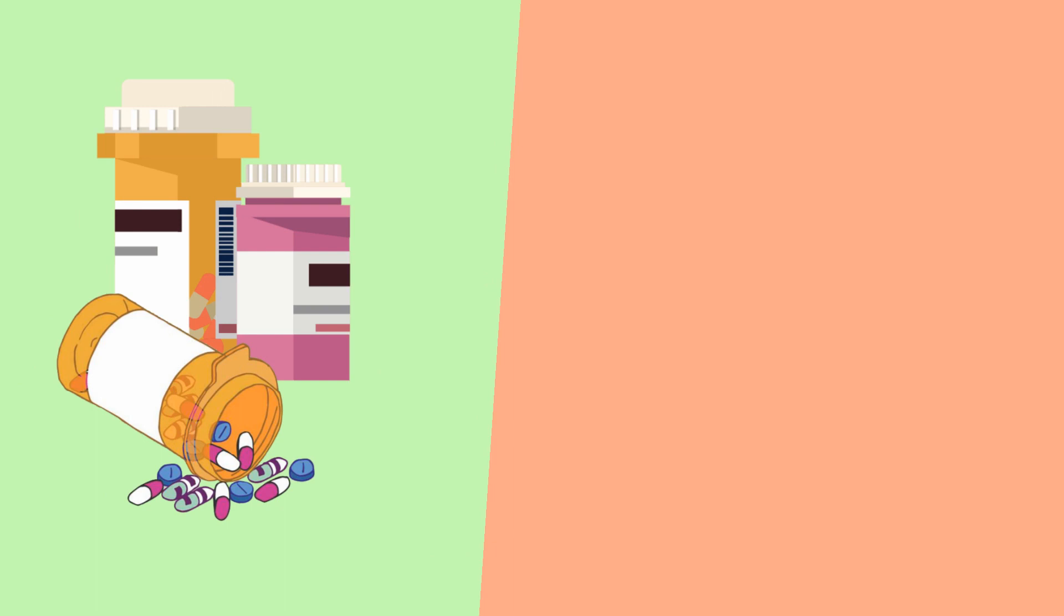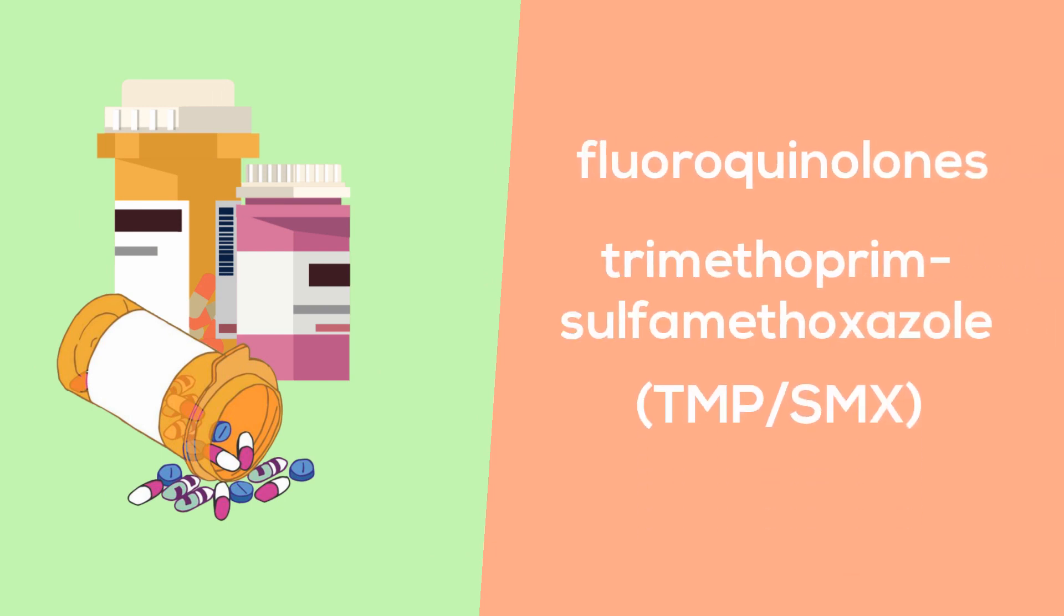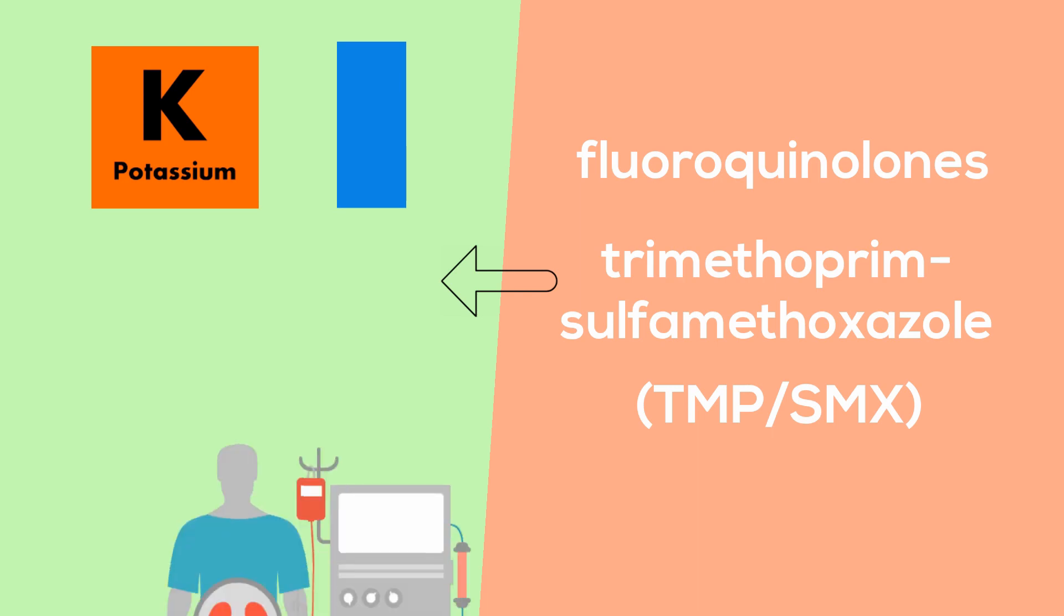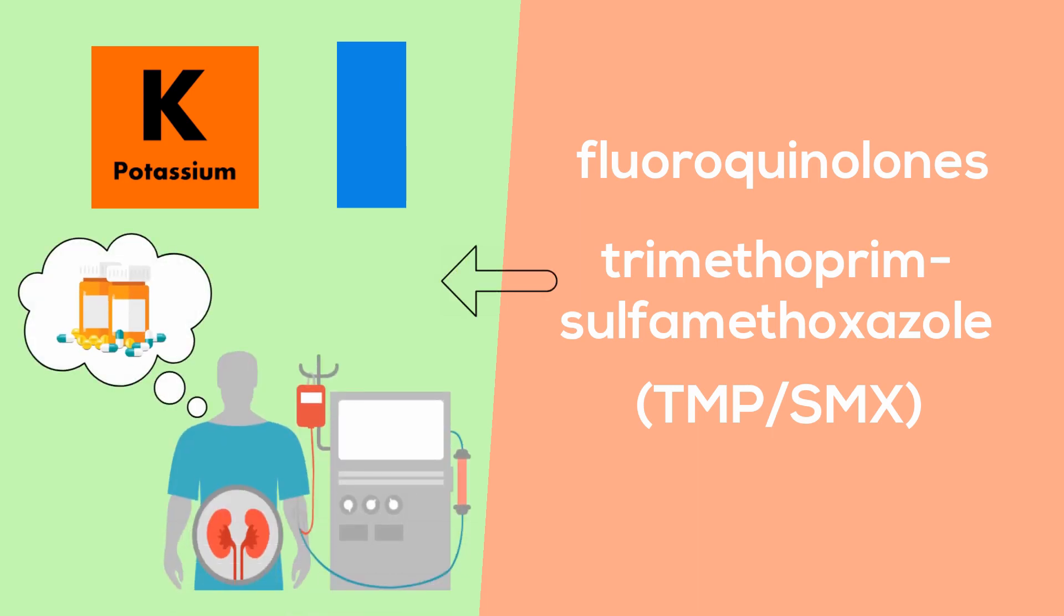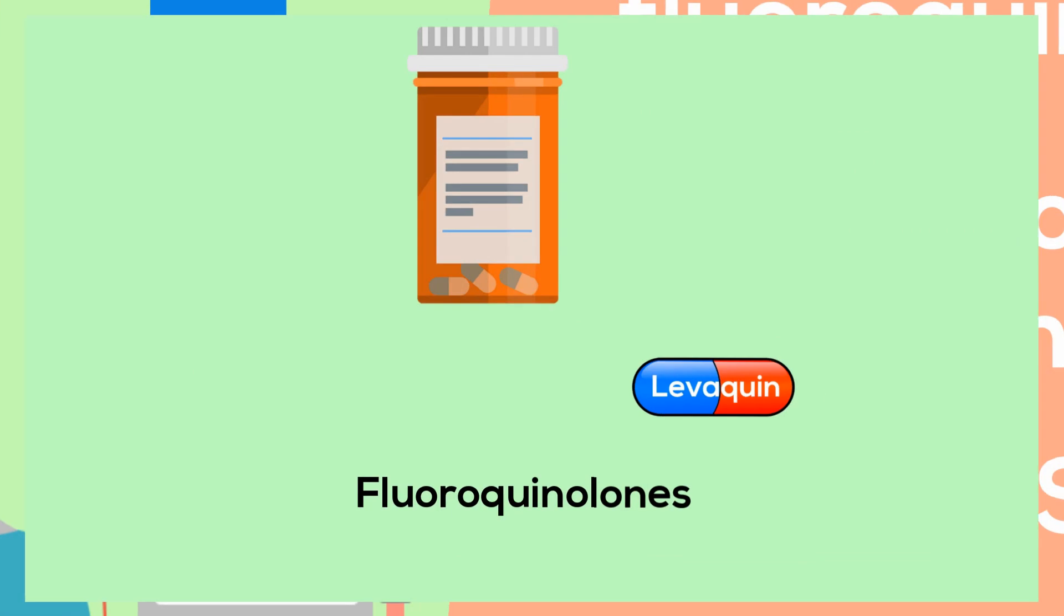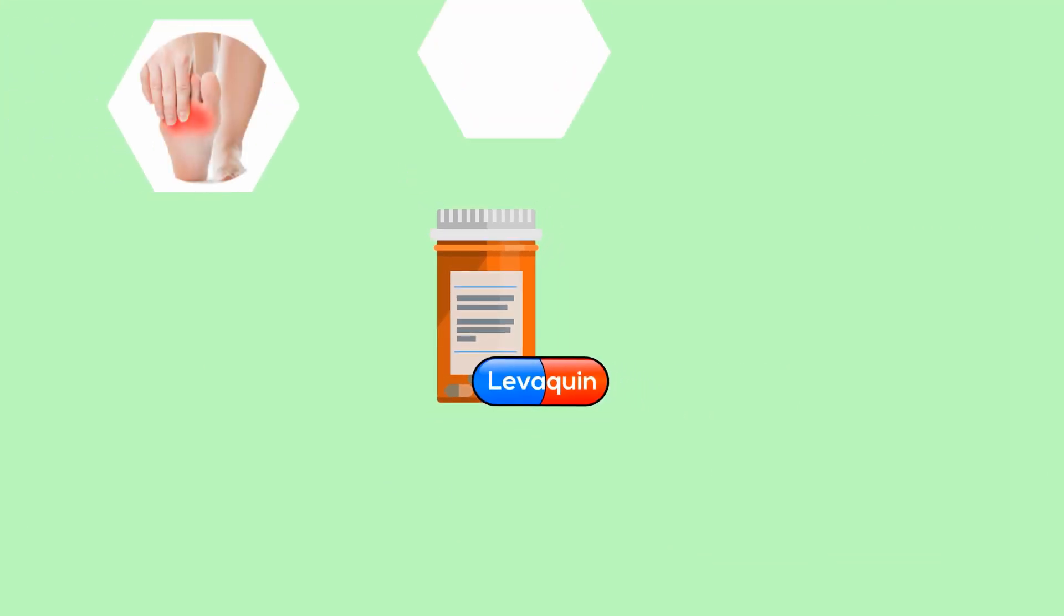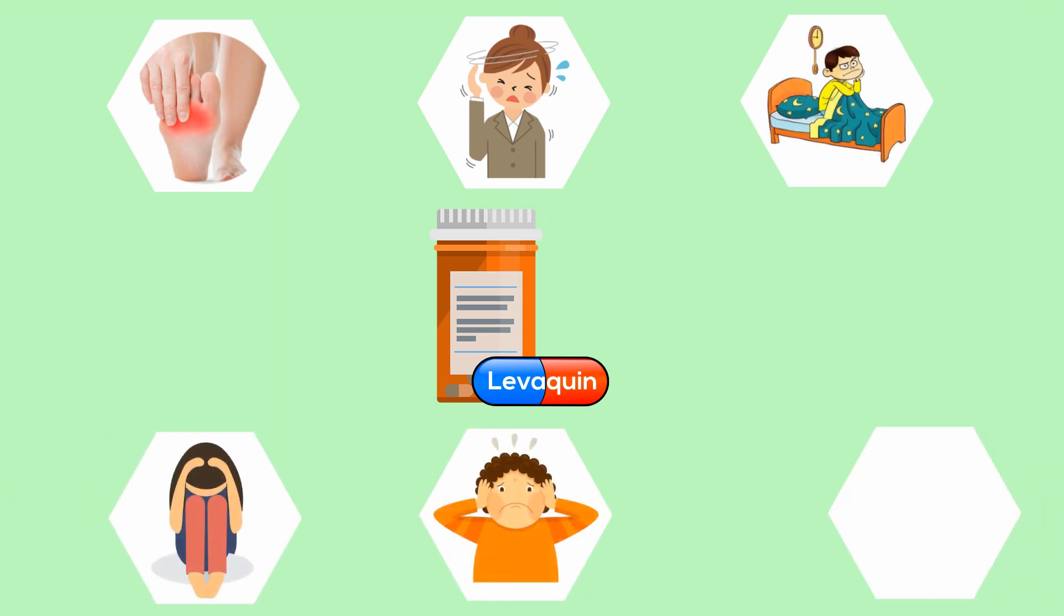Antibiotics commonly prescribed are fluoroquinolones and trimethoprim-sulfamethoxazole. TMP-SMX can increase potassium, especially in those with renal insufficiency who are also taking blood pressure medication ACE or ARBs. Fluoroquinolones like Levaquin can cause peripheral neuropathy, dizziness, insomnia, anxiety, restlessness, and tendon rupture.